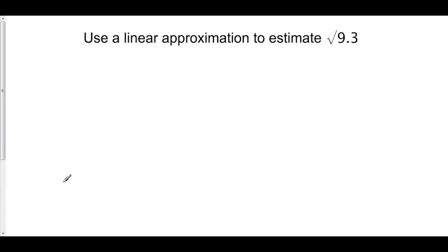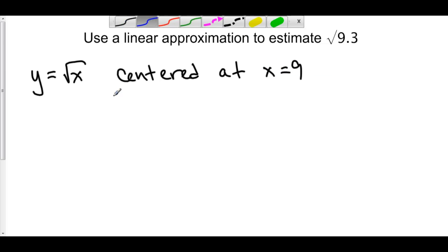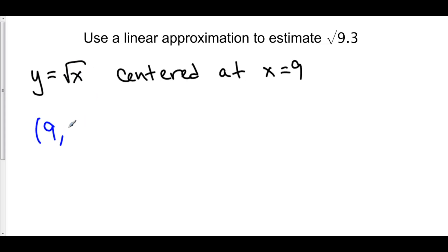Let's use a linear approximation to estimate the square root of 9.3. Our function is going to be y equals the square root of x, and we're centering this at some value close to 9.3 that we can easily compute. So let's center this at x equals 9. We need a point: our point is 9 comma 3, since the square root of 9 is 3.